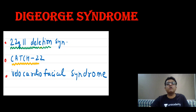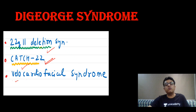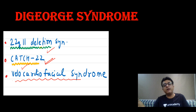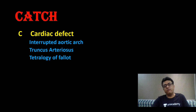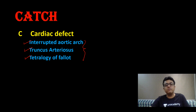Now come to DiGeorge syndrome. DiGeorge syndrome shows 22q11 deletion. Another name is 22q11 deletion syndrome; other names are CATCH-22 and velocardiofacial syndrome — you need to remember all three names. This is very important; questions were asked in All India and AIIMS exams. The mnemonic is CATCH: C for cardiac defects — interrupted aortic arch, truncus arteriosus, and tetralogy of Fallot are the three commonest cardiac anomalies associated with DiGeorge syndrome.